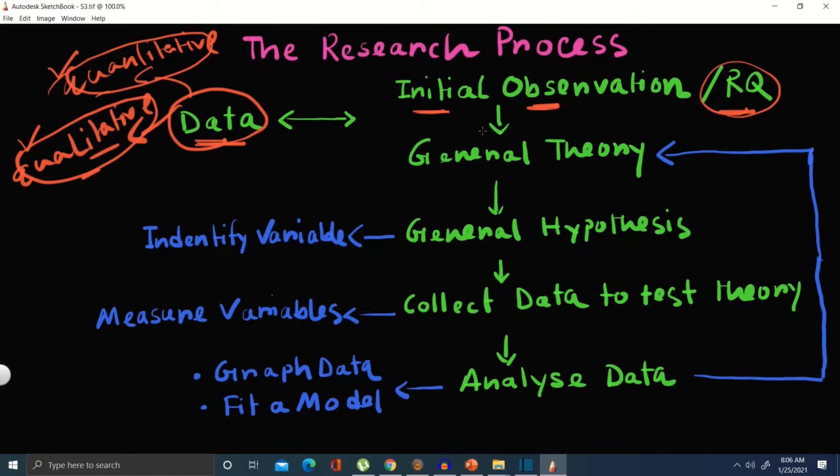Then after that data observation, we come to the next step called general theory. You need to understand that we have to come up with a theory. For instance, we know that there is an inverse relationship between quantity demanded and price in the law of demand. It's a general theory or law for economics. We need to start with a theory.